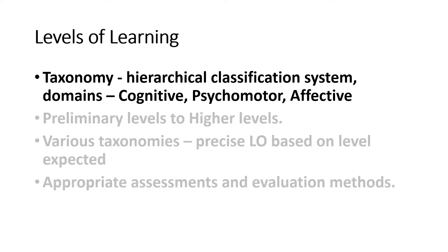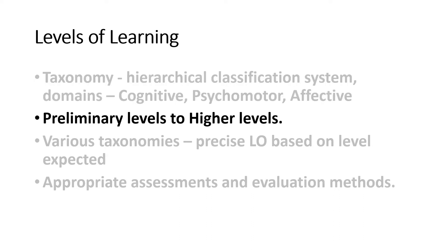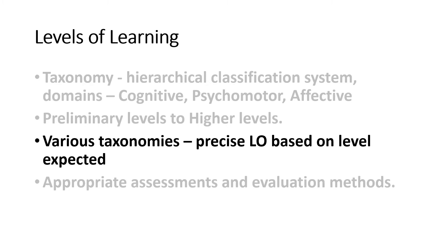What are the levels of learning? A taxonomy is a hierarchical classification system that is structured from simple to complex and concrete to abstract. There are three domains: cognition, psychomotor skills, and affective or feeling domains. The hierarchical structure requires that preliminary levels be mastered before learning at higher levels can occur. Writing learning outcomes with the help of taxonomies helps in developing precise LOs aligned to the appropriate level of learning expected from the learners.